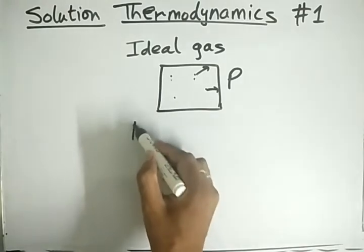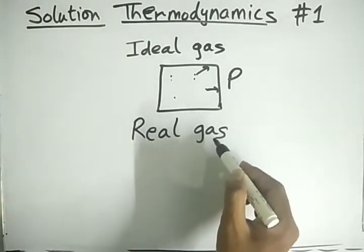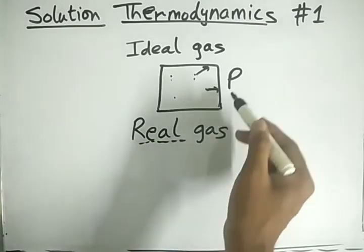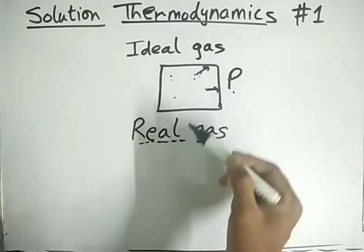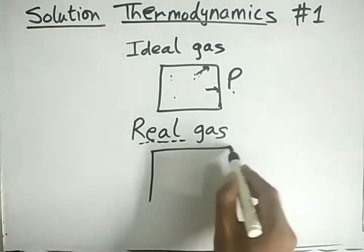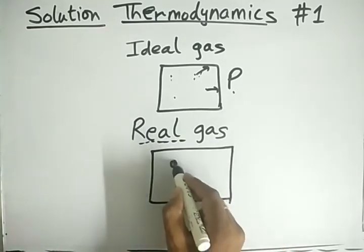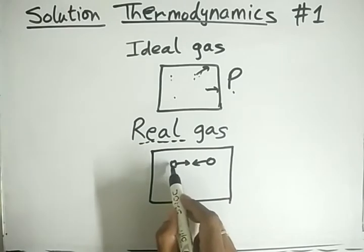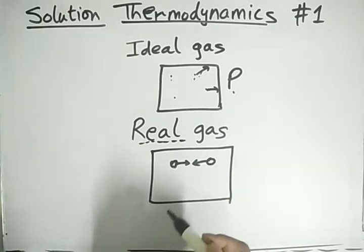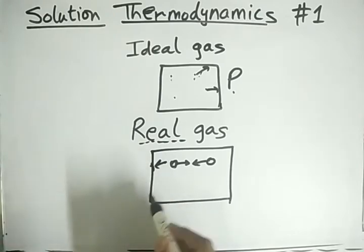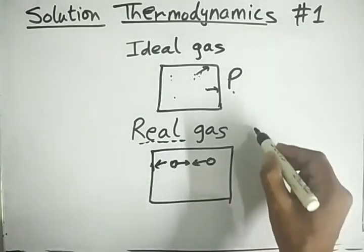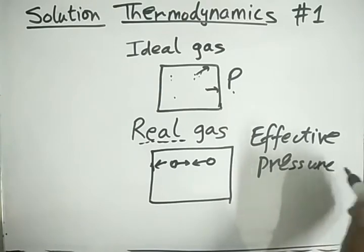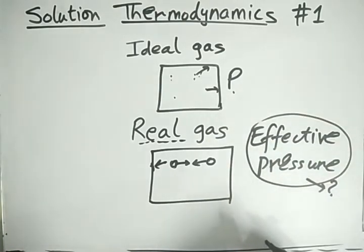People then began to know that real gases exist too, and not every gas is an ideal gas. Ideal gas is very rare or may not even exist. For real gases, the molecules have some interaction and some volume. If there is a force of attraction, the molecules will try to come towards each other and the force exerted on the walls will actually be reduced. So what is this effective pressure?